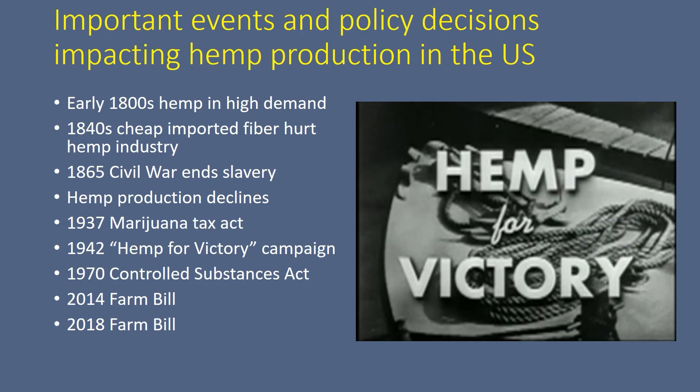Here is a list of different events and policy decisions affecting hemp production in the U.S. In the early 1800s there was very high demand both here and overseas. In the mid-1800s cheap imports hurt that. In 1865 the Civil War ended slavery — again we mentioned how slaves were a large part of the production process — and production did decline.